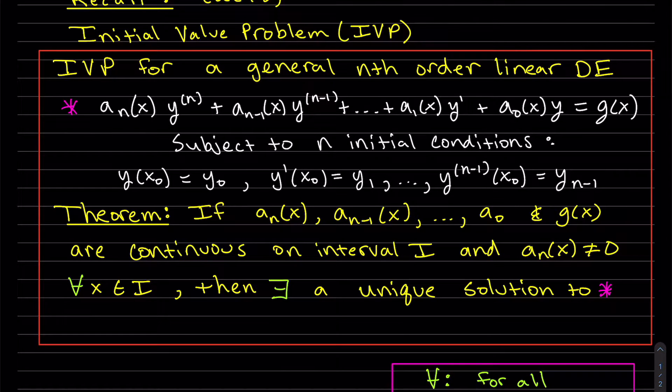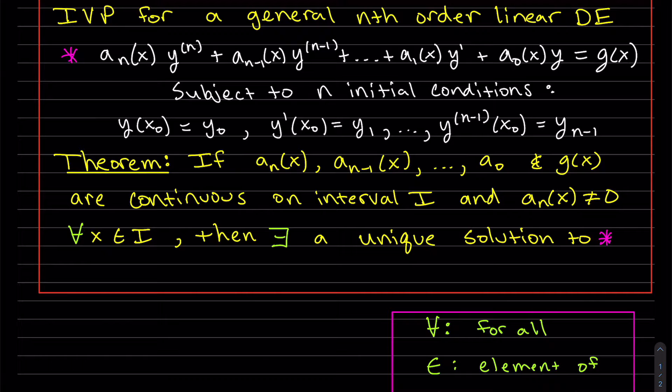So the theorem says if all of these coefficients in terms of x's, these a_n's, if all of them and g(x) are continuous on some interval I, and also the leading coefficient in terms of x is non-zero for all the x's on that interval, then there's a unique solution to this nth order linear differential equation. I don't know if you've noticed, but I am using some notation that's very common in math. This upside-down A means for all. I didn't use this one in here, but this funky-looking E is element of. And the backwards E means there exists. So this means there exists a unique solution.